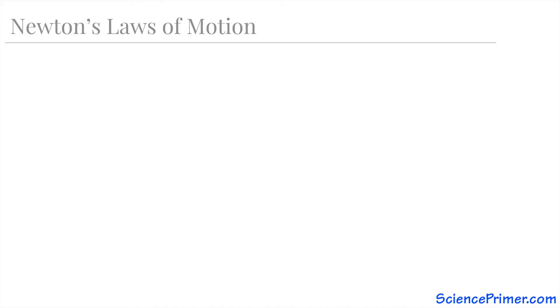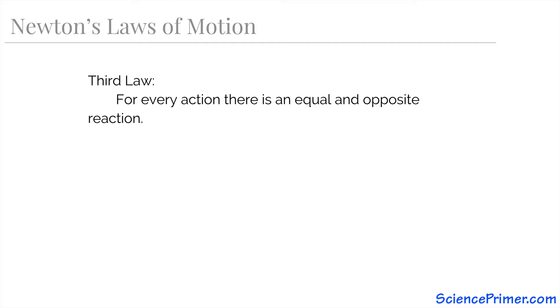The third law describes the consequences of the fact that a force requires an interaction between two objects, specifically that when two objects interact, both experience a force, and that this pair of forces are equal but in opposite directions. When a ball hits a wall, the ball applies a force on the wall, and the wall applies a force on the ball. These forces are equal and pointing away from each other.